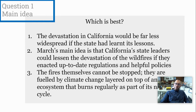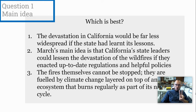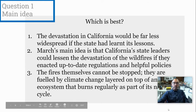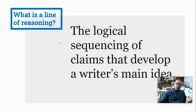If you read the article, you would know that number two is the best. First, it expresses the actual main idea of the article and encompasses all the major sections. It does not blame the wildfires on global warming, even though March acknowledges the role climate change plays. Importantly, it encapsulates March's main idea that state leaders could lessen the devastation if they enacted up-to-date regulations and helpful policies — those are the two major sections of the article.